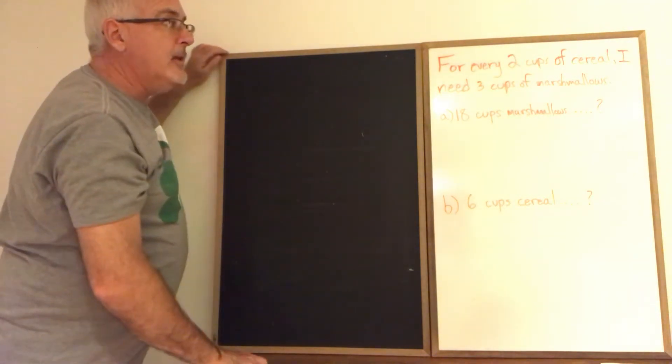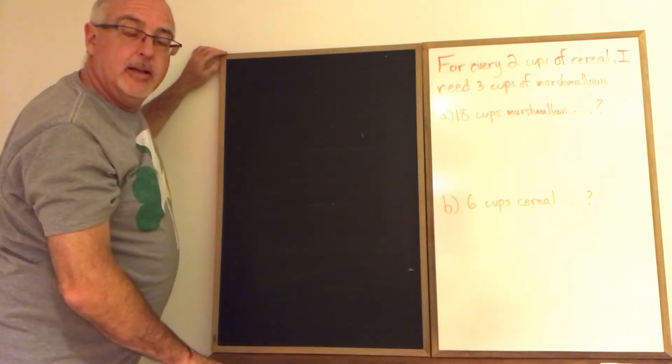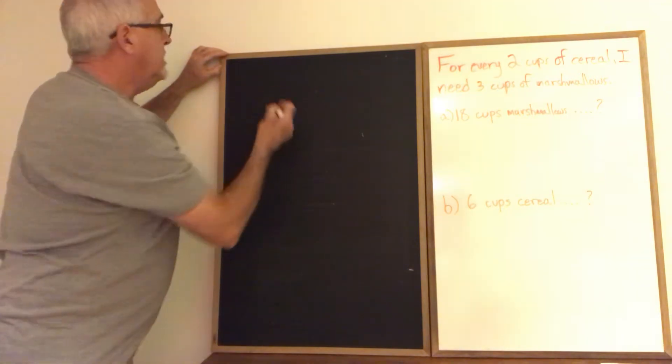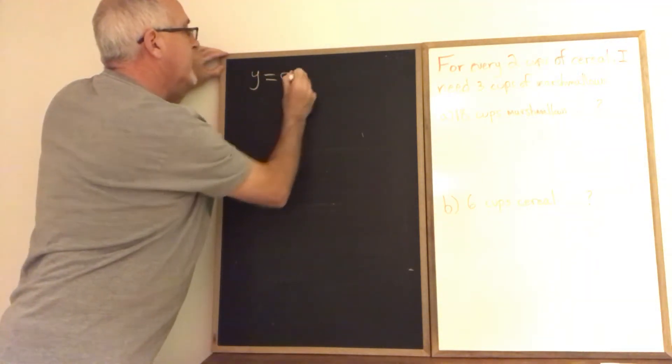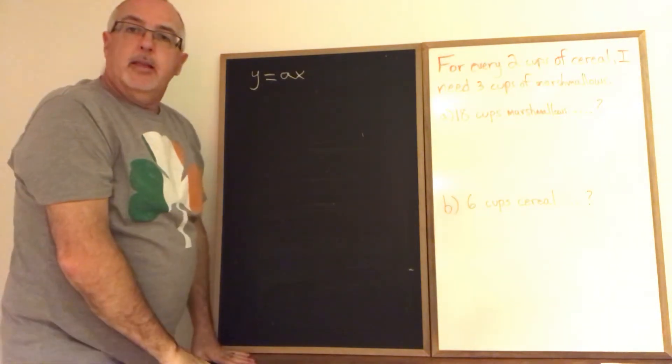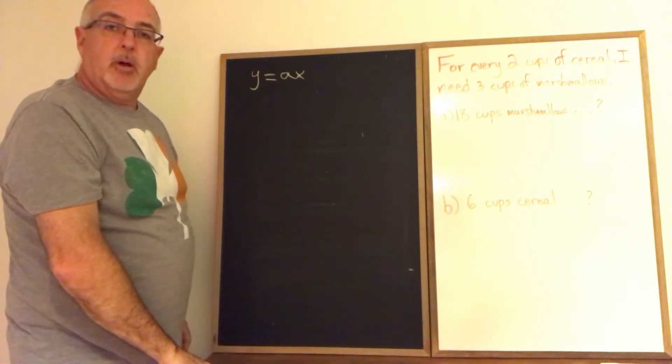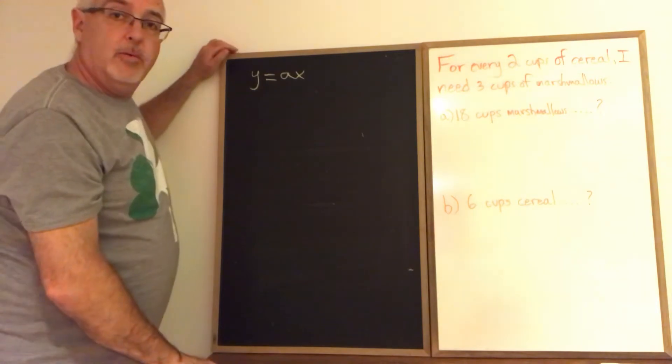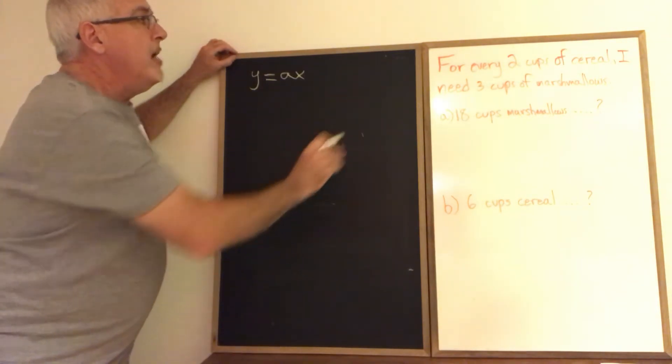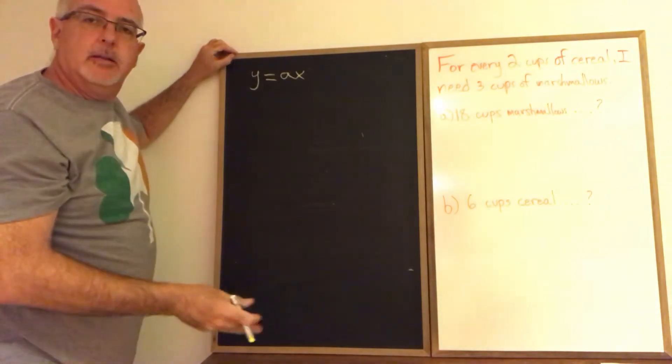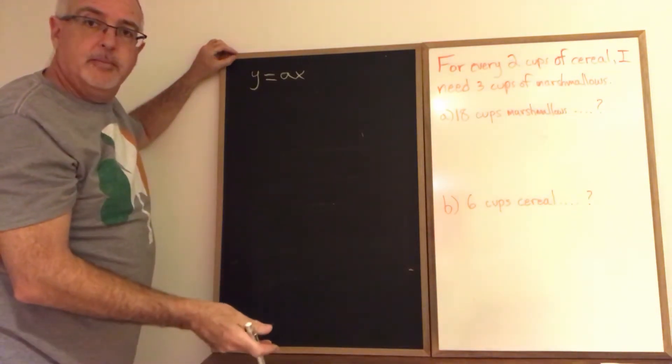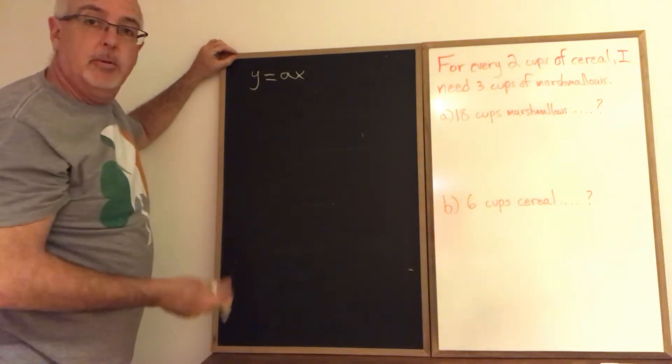So I'm going to show how to make the algebraic model in a situation like this. Now the model is in the form Y equals AX. In the secondary algebraic modeling course that I'm making this video for, this situation could also be used to ask a question where you use a proportion, and the answer could be given using a proportion as well.